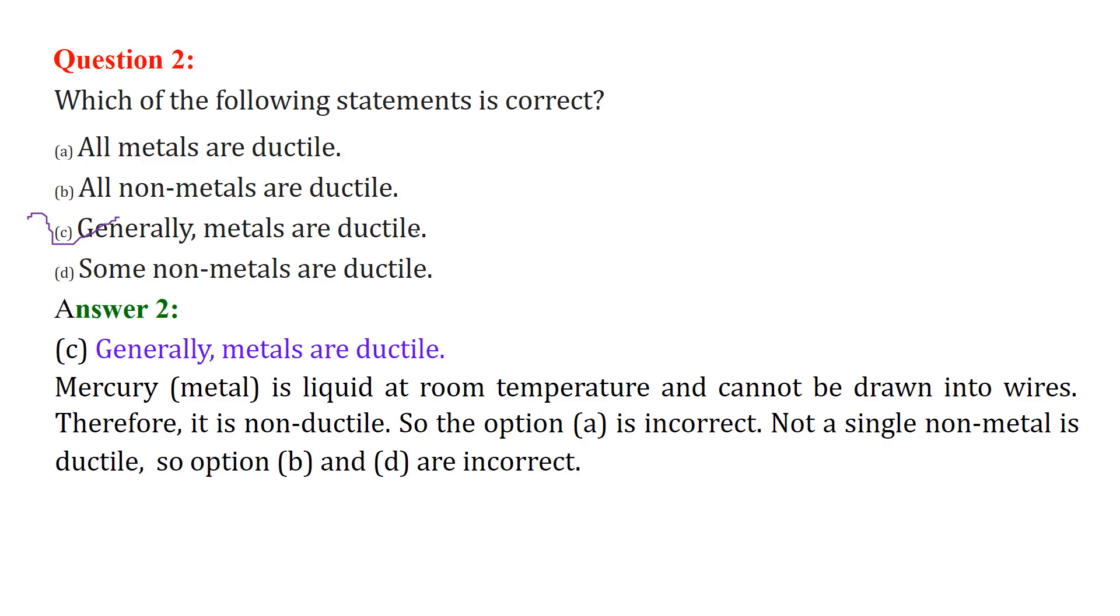The option all metals are ductile becomes incorrect, so we cannot take this. Then not a single non-metal is ductile. So option B and D are obviously rejected. So we choose generally metals are ductile.